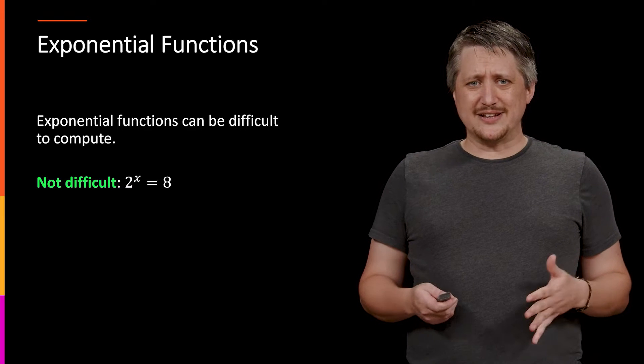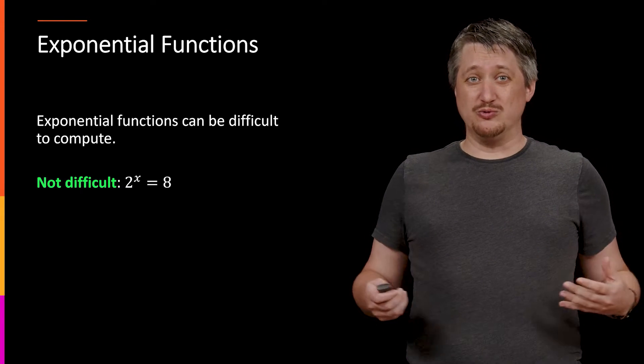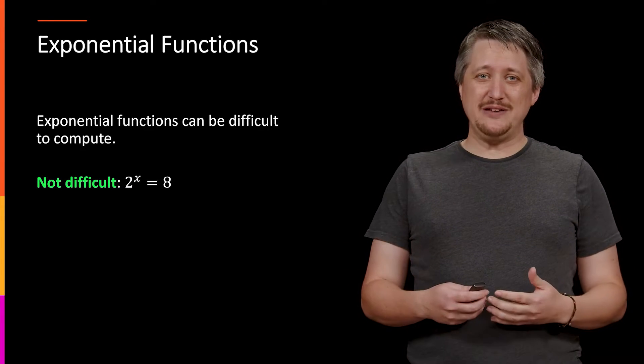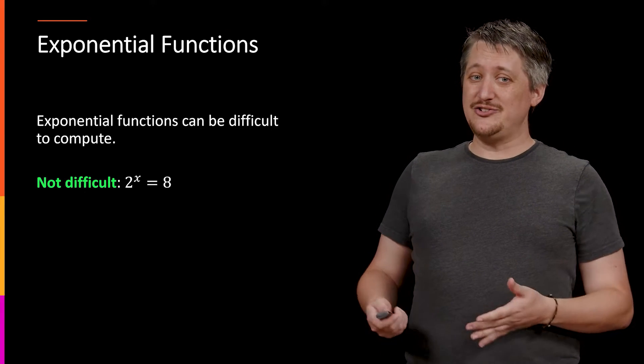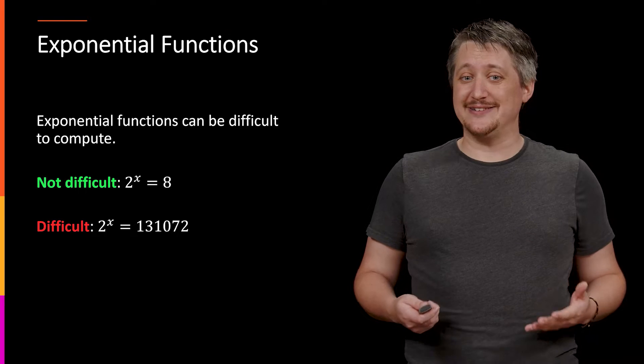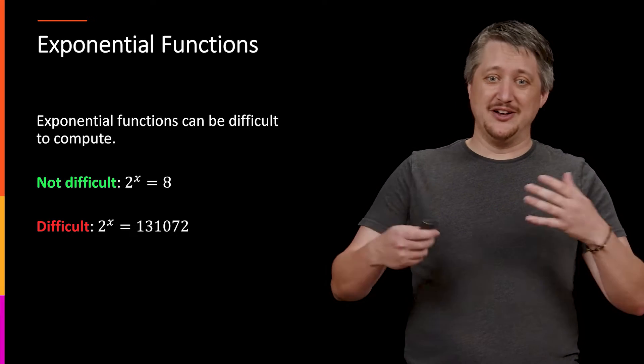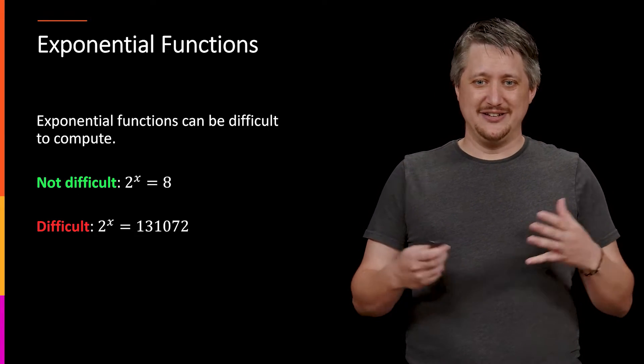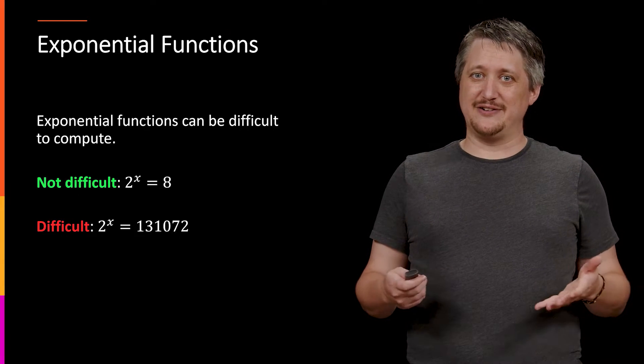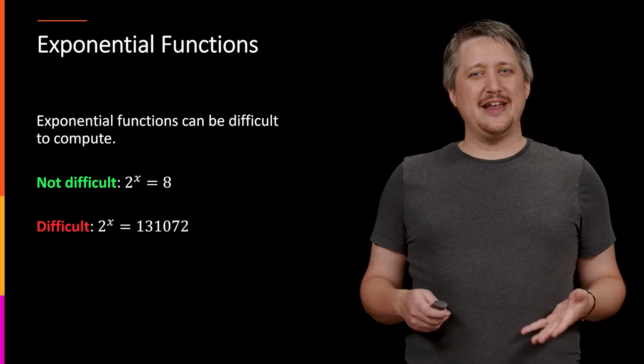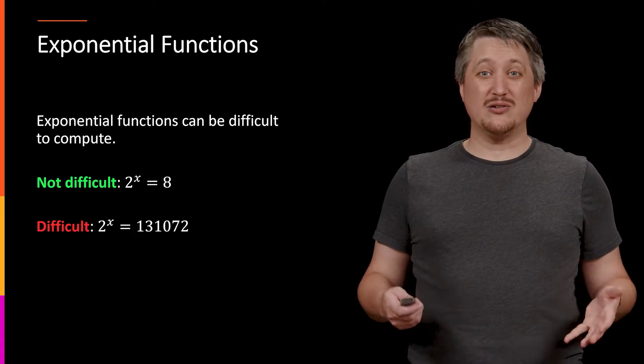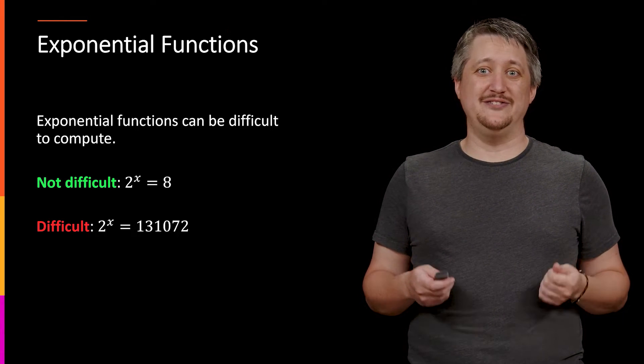But it turns out that exponential functions grow really fast. So even if it's a nice number, if that number is large, it can get pretty difficult to find. Like 2^x = 131,072 is very annoying to try to answer. But it doesn't even have to be hard because it's large - it can be hard because it's just not nice.